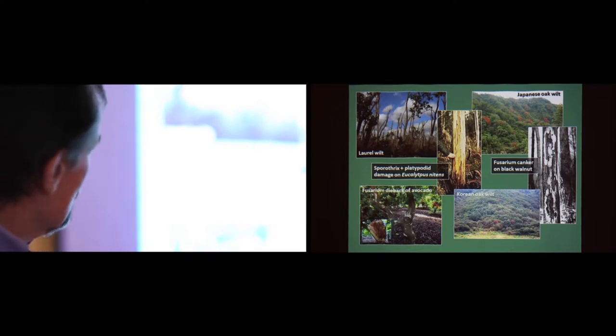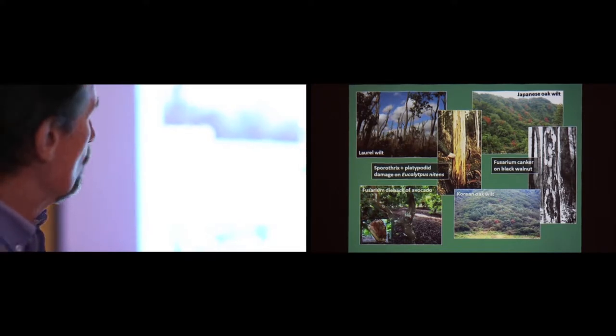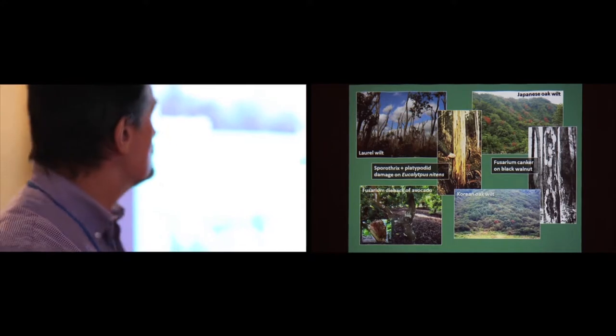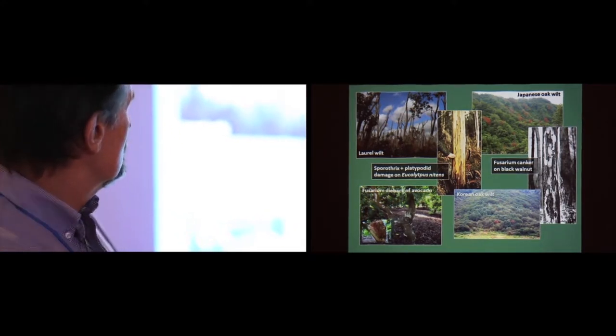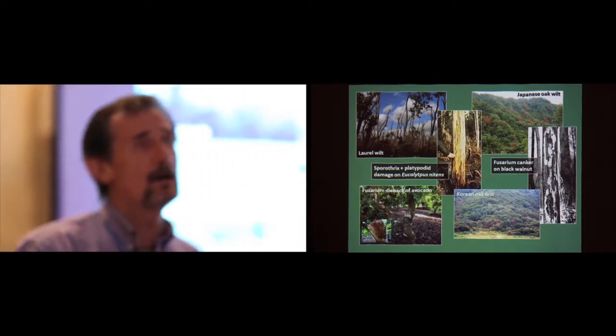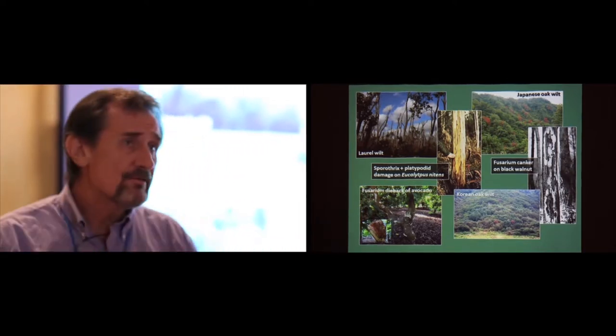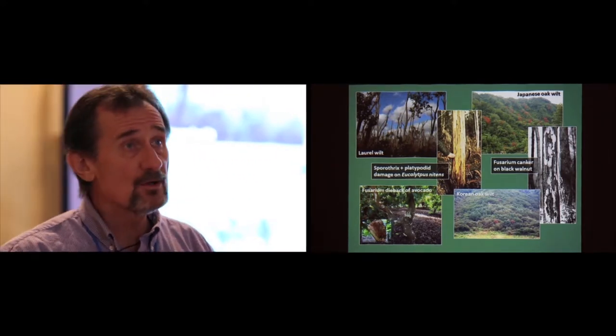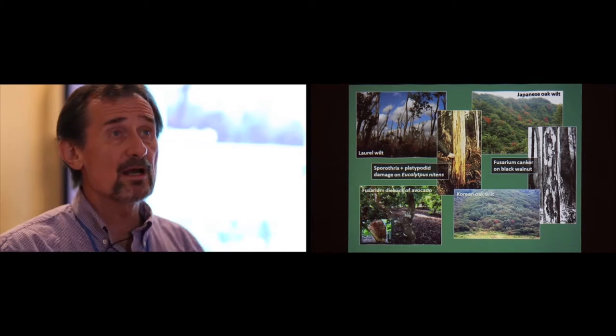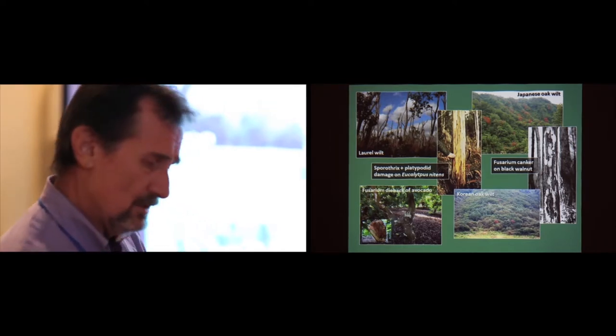Here's a situation down here with avocado. We've heard about it. There are two other Raphilia incited diseases in Asia, Japanese oak wilt and Korean oak wilt. There is a disease in New Zealand, Anothophagus and eucalyptus and some other trees that's incited by sporethricks. Very unusual, but it's vectored by some platypodid vectors. Uri mentioned this fusarium canker situation on black walnut and tulip poplar and some other trees in nursery type situations in the United States. So these are just some examples.